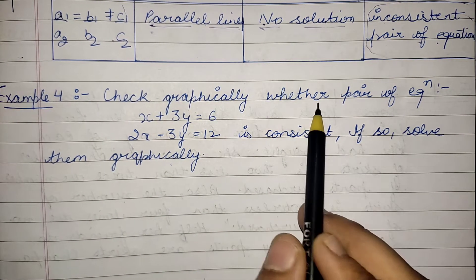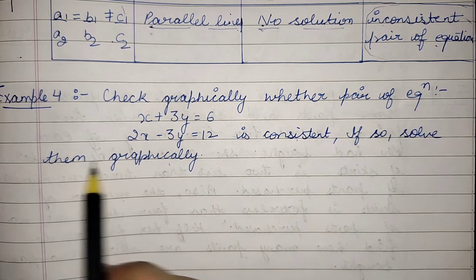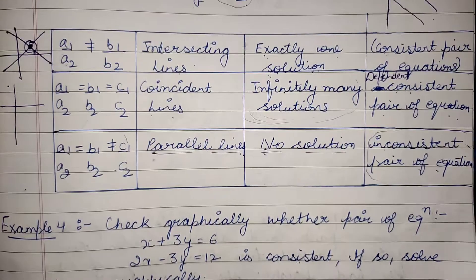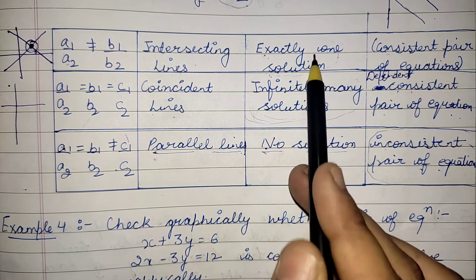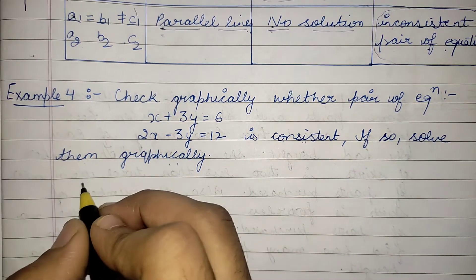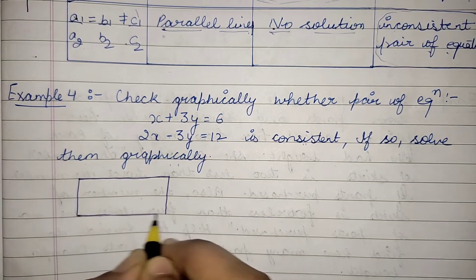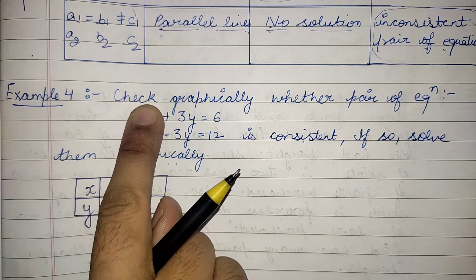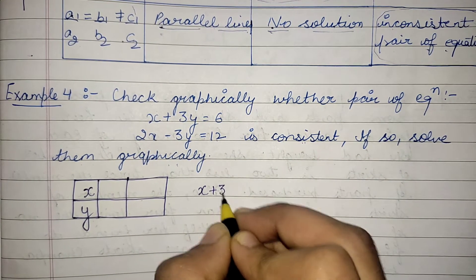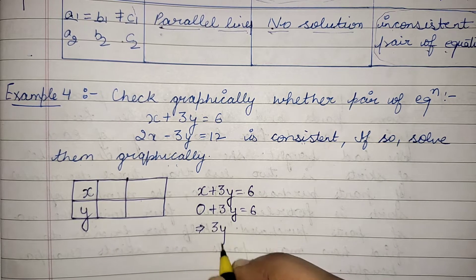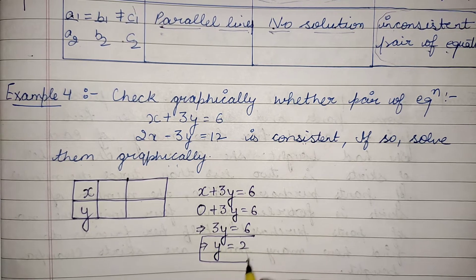The question says: check graphically whether the pair of equations is consistent; if so, solve them graphically. For consistent equations, the lines will intersect at exactly one point. To plot the graph, first make a table of x and y values. For the first equation x + 3y = 6: if x = 0, then 3y = 6, so y = 2.